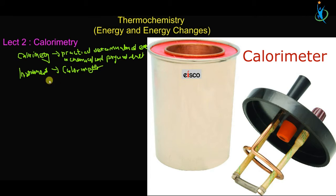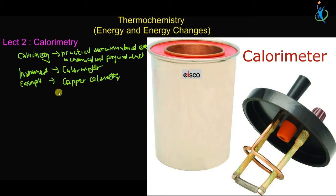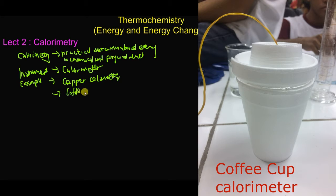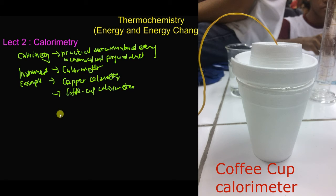Examples of calorimeters we often use include the copper calorimeter and the coffee cup calorimeter. The coffee cup calorimeter is the styrofoam cup — the kind used as takeaway cups. It is a simple one most often used in school laboratories.